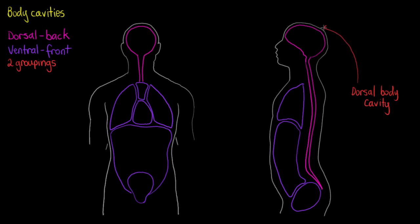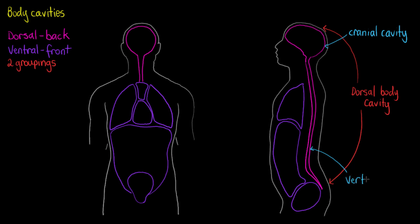From here, we subdivide the dorsal cavities into two segments. We refer to the cavity that houses our brain as the cranial cavity, and the cavity that houses our spinal cord we refer to as the vertebral cavity. That's because the vertebrae of the spine aren't just there to keep us standing upright — they're also there to protect the spinal cord.